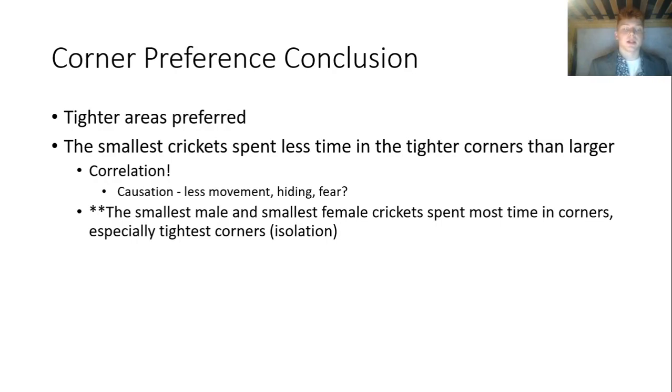What I concluded is that once again tighter areas are preferred amongst all crickets, while the smallest crickets spent less time in the tightest corners than the larger crickets. I found this correlation in my graphs. However, I cannot conclude causation, although I would speculate that these crickets are moving less and they are hiding in the corners because they fear the larger crickets, the leader crickets, that are in the tightest corners when in groups, so they're hiding in opposite corners.